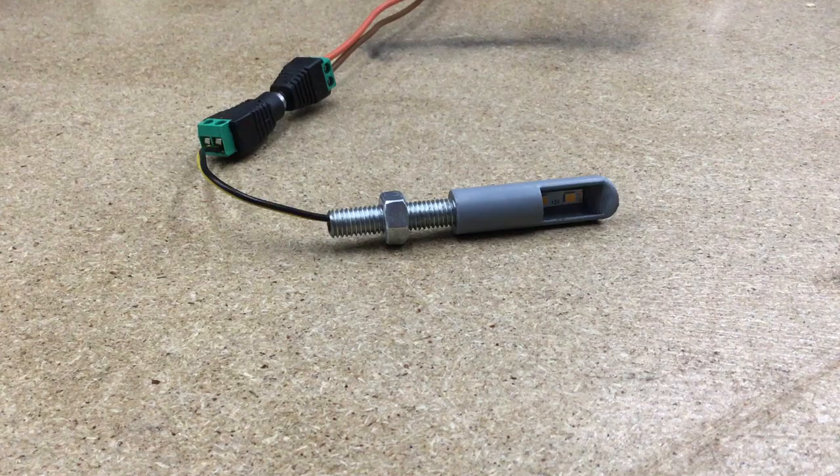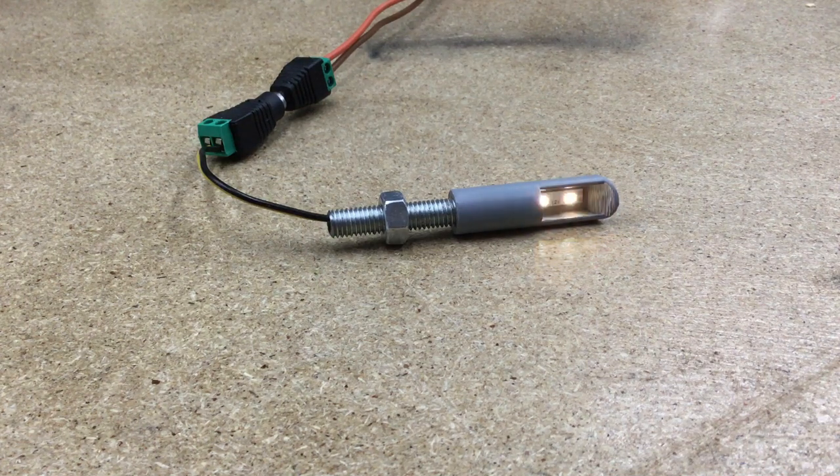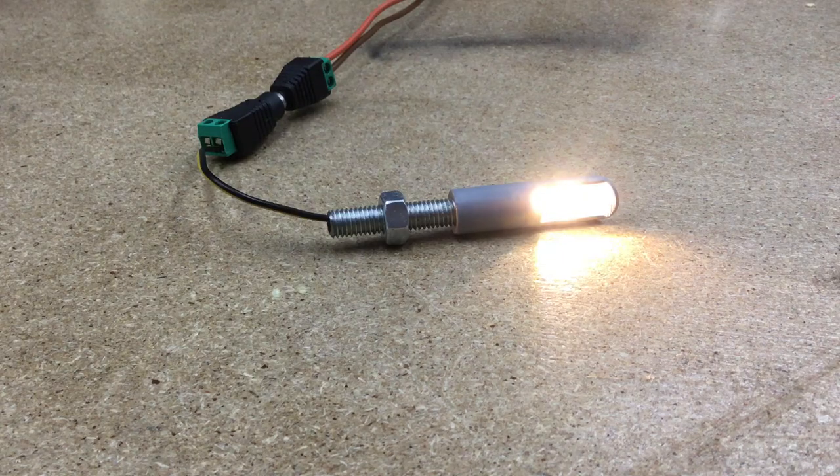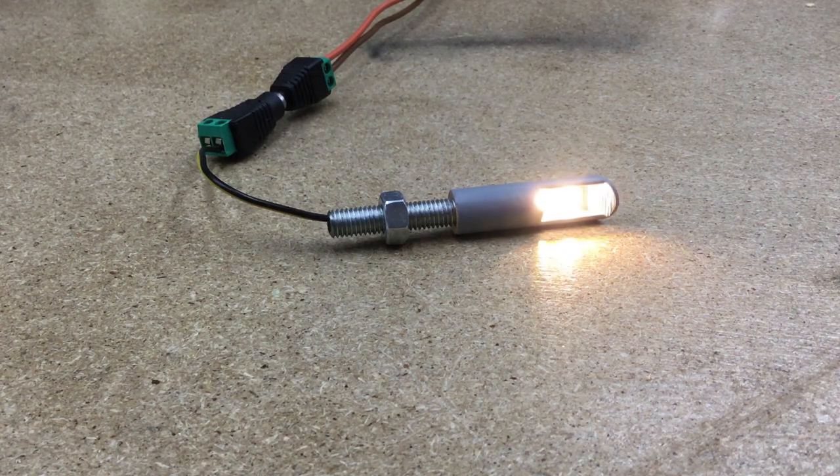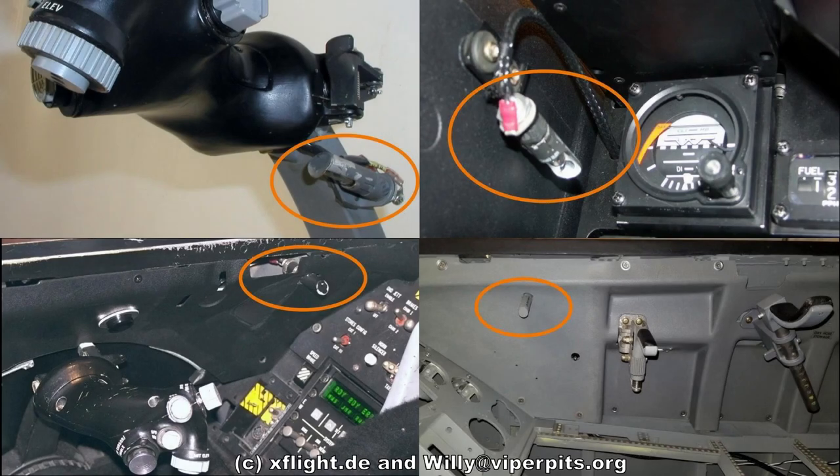Hi and welcome to my sim hangar. In this video I am going to show you how I built this mini floodlight. There are four places in the F16 cockpit where these kind of lights are located: on the throttle, the left and right auxiliary console, and on the right side of the center console.